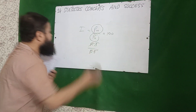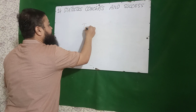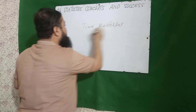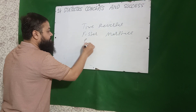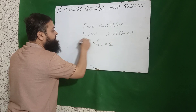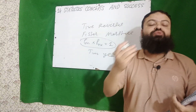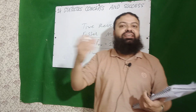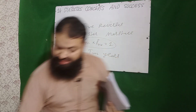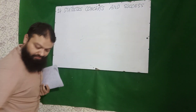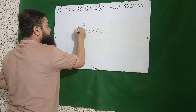The time reversal test is satisfied by Fisher as well as Marshall. The condition is: P₀ₙ multiplied by Pₙ₀ equals 1. This is used for two years — for example, year 2007 and 2008 — where one is the current year and the other is the base year, then roles are reversed.